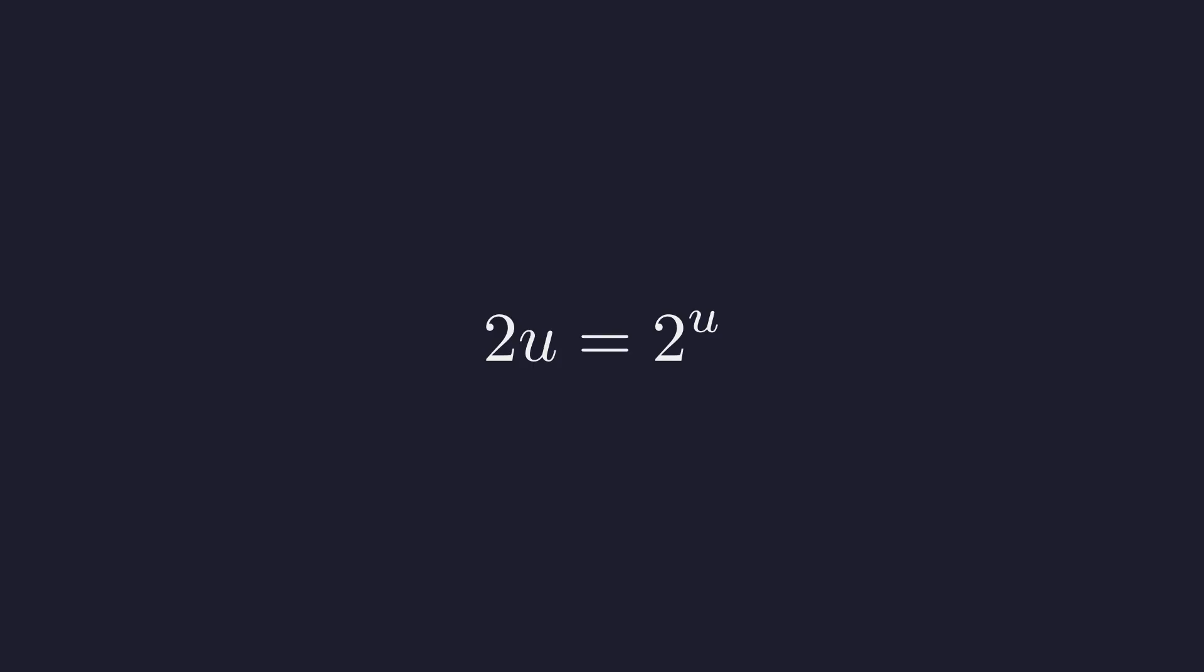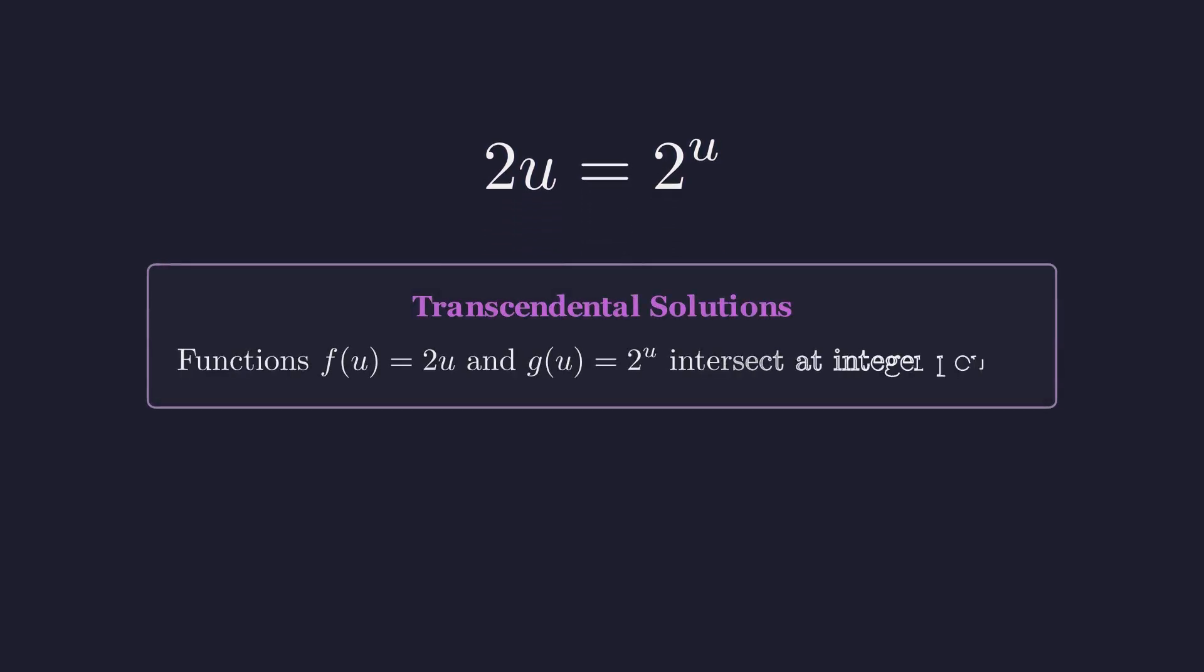Multiplying by 2 reveals the transcendental equation: 2u equals 2 to the power of u. Equations that mix linear and exponential terms often require inspection. Here we look for integer solutions where the linear growth matches the exponential growth.